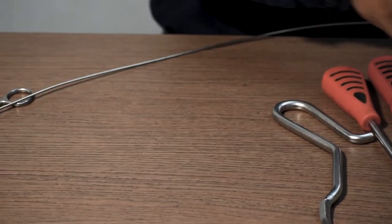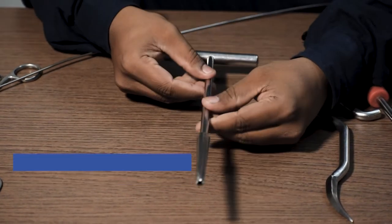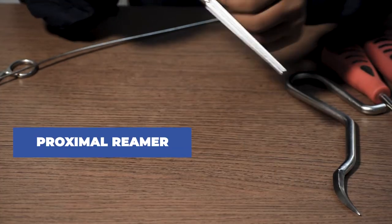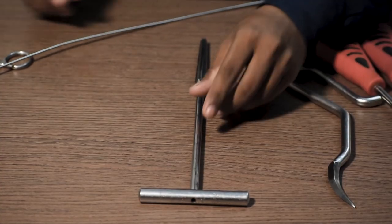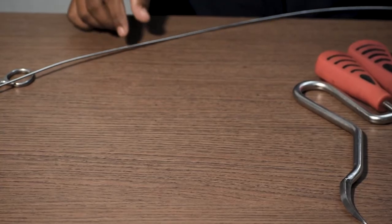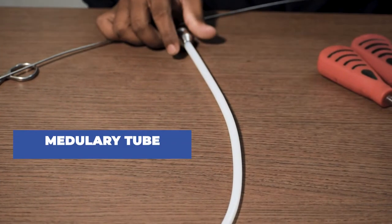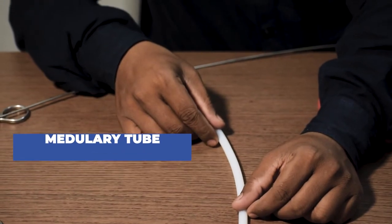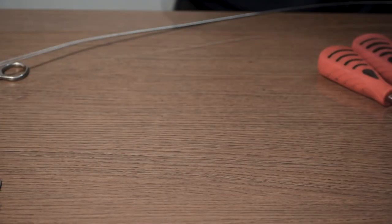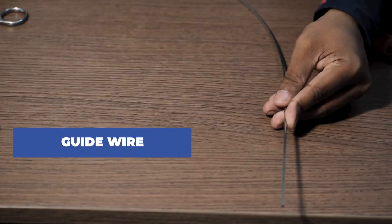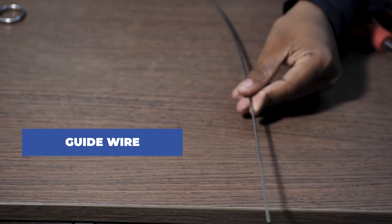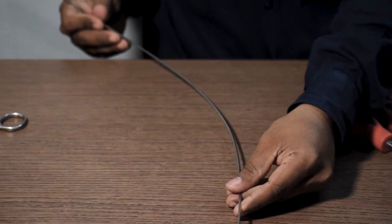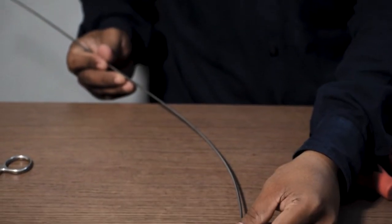After that, this proximal reamer is used to do further reaming. This device is called a medullary tube and it is inserted in the canal after the reaming is done. After that, plain guide wire is inserted in the canal and the medullary tube is taken out, and it stays inside the canal till the time the nail is completely in.